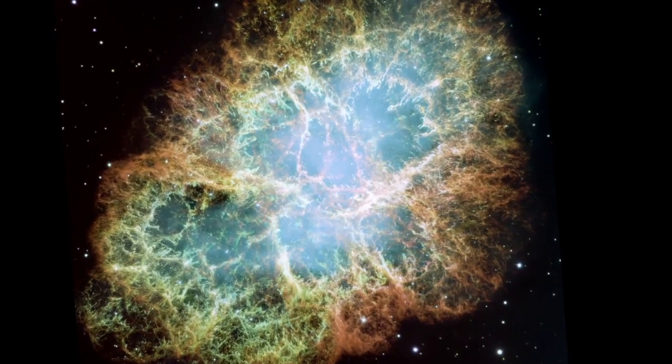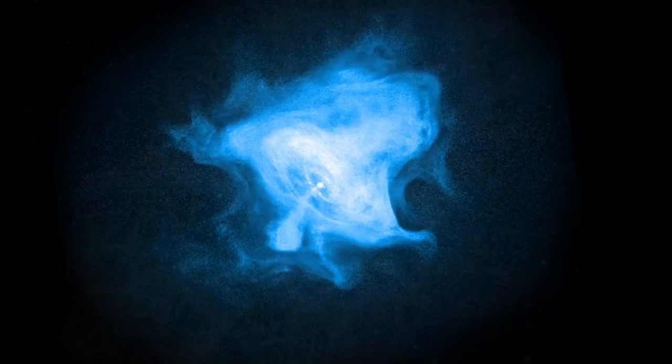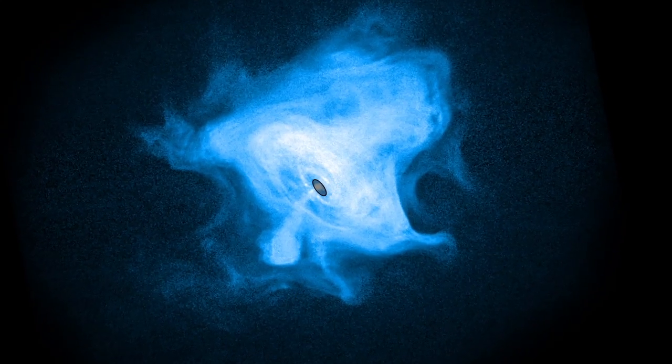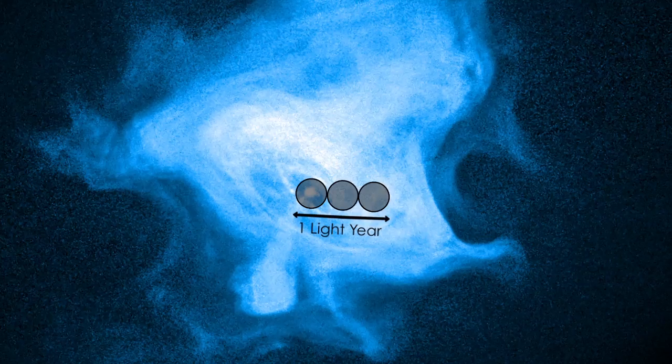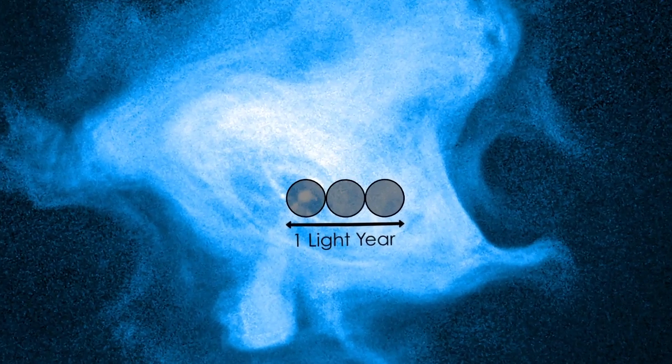This hints that whatever's causing the flare is happening within about a third of a light year from the pulsar. And rapid changes in the rise and fall of gamma rays imply that the emission region is very small, comparable in size to our solar system.